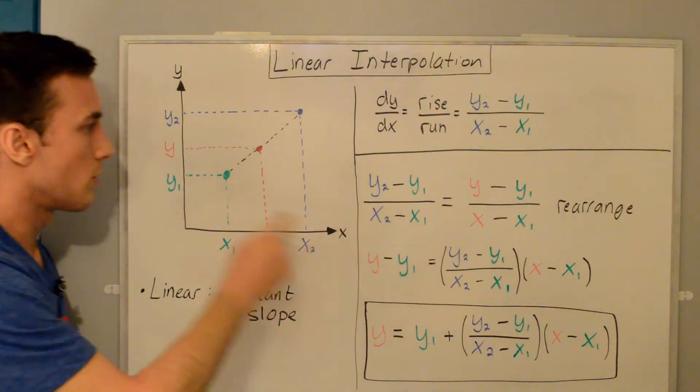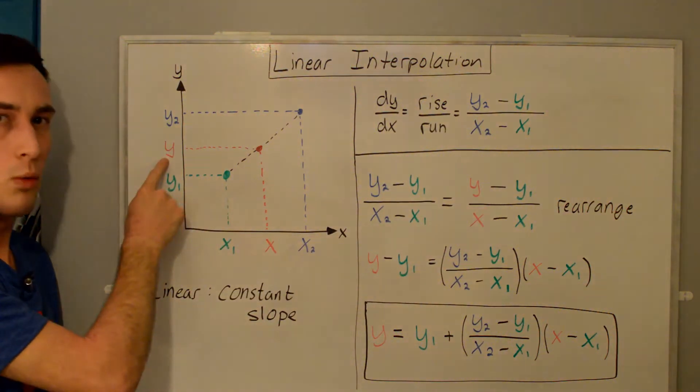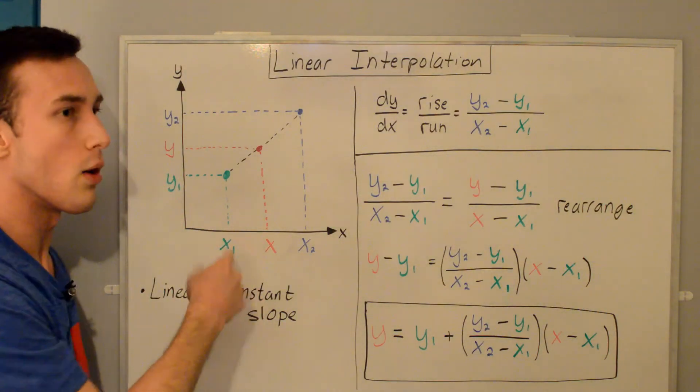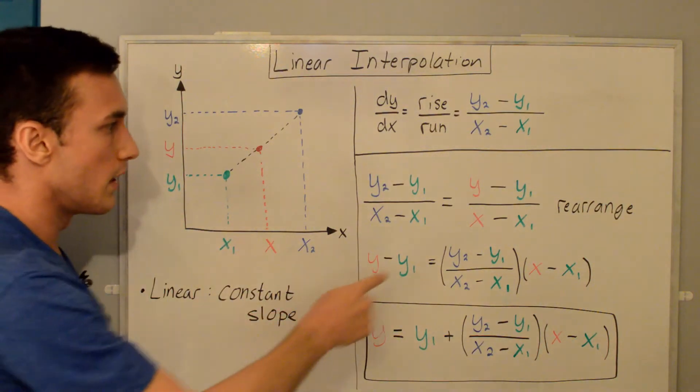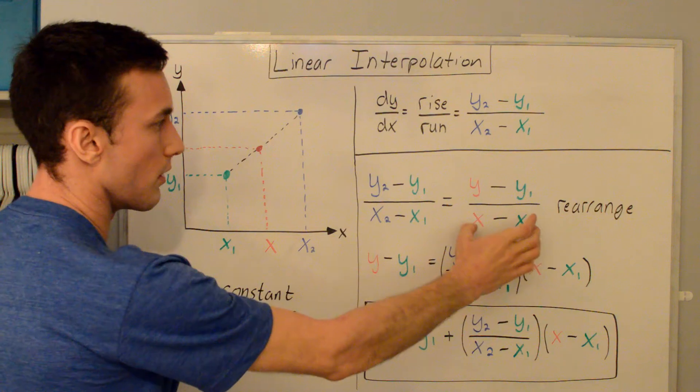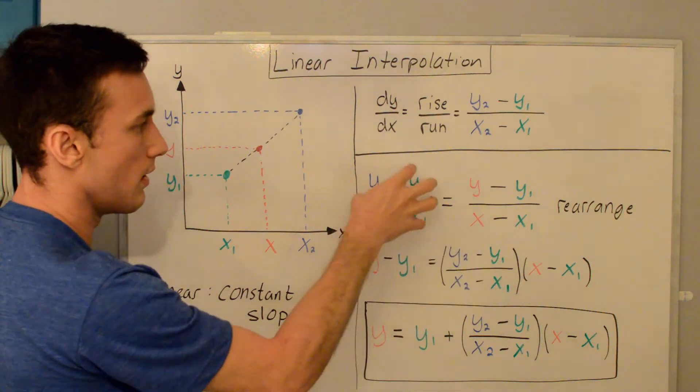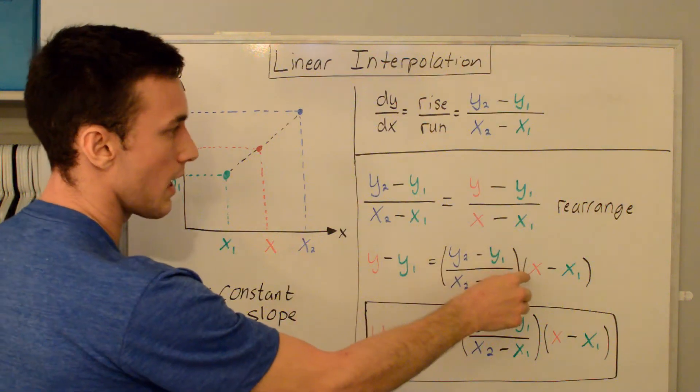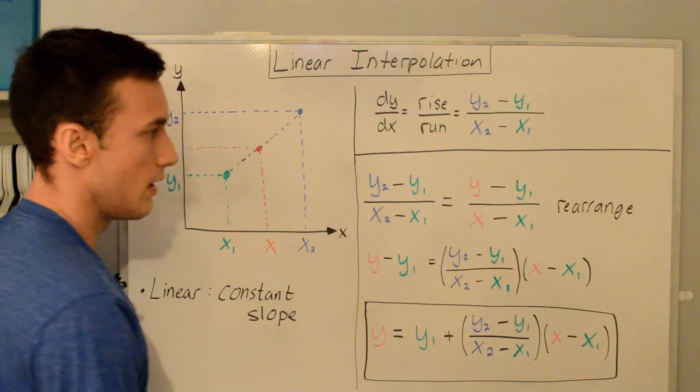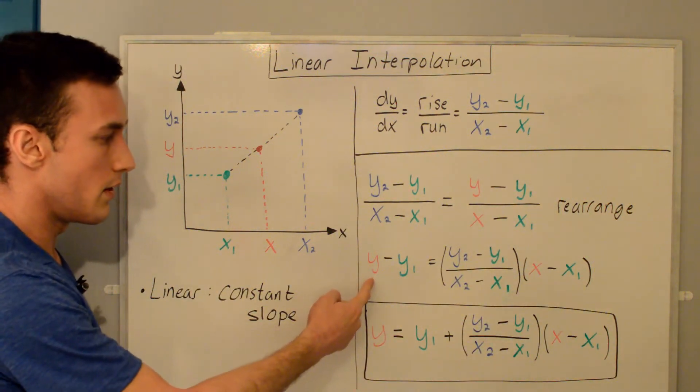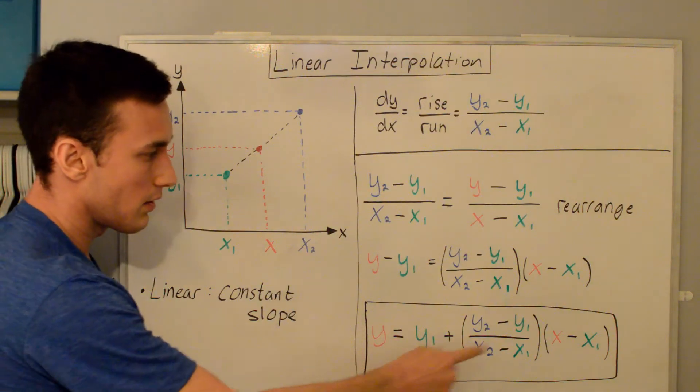Just rearranging this, the only unknown that we have right now is y, because we're saying, oh, I want it at a certain x value. If we rearrange this by just multiplying the denominator over to the other side, we get y minus y1 is equal to this thing times the denominator here. We're just solving for y, the only unknown, and we solve for y, and we get this equation here.